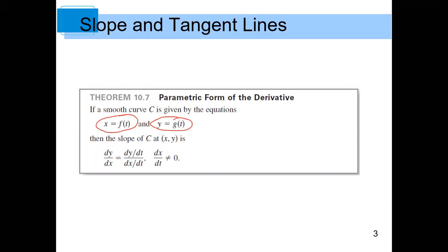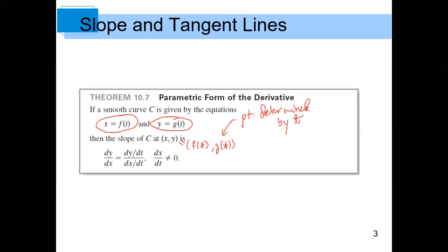If I want the slope of the curve at a particular point — just to be clear, that means this is the point (f of t, g of t). Does that make sense? So this point is determined by t — by the particular t value that you are looking at.